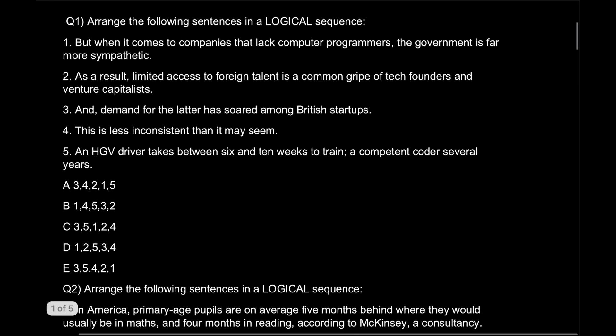So let's get started. The first question says arrange in a logical sequence. As we see, three one three one three, which means our starting sentence is either going to be three or going to be one. Now let's read it. But when it comes to companies, well remember one thing.